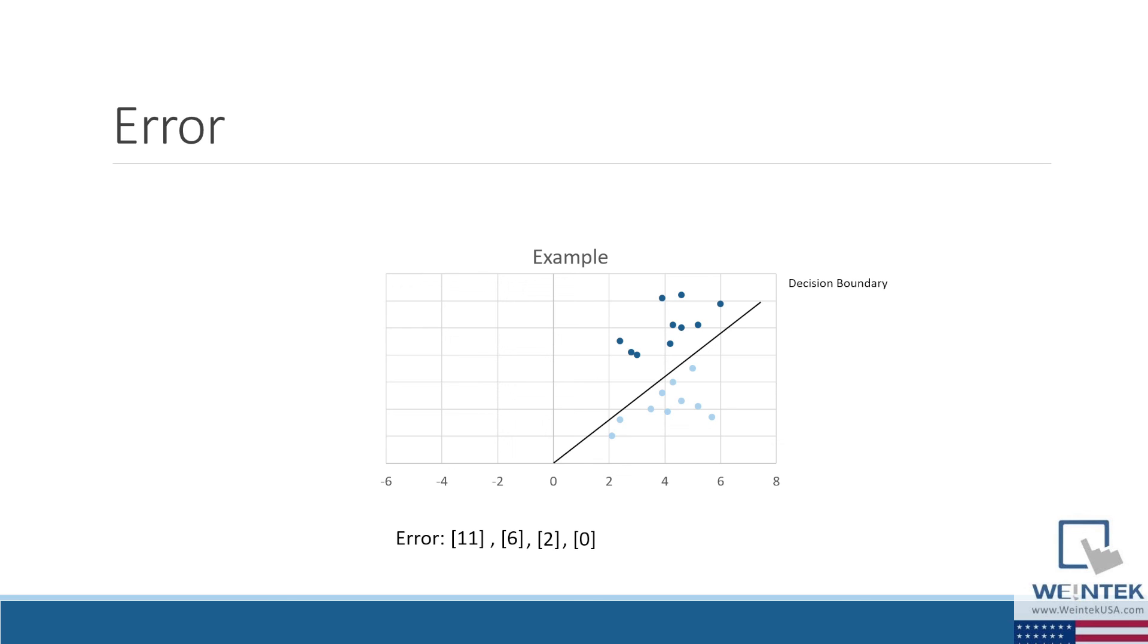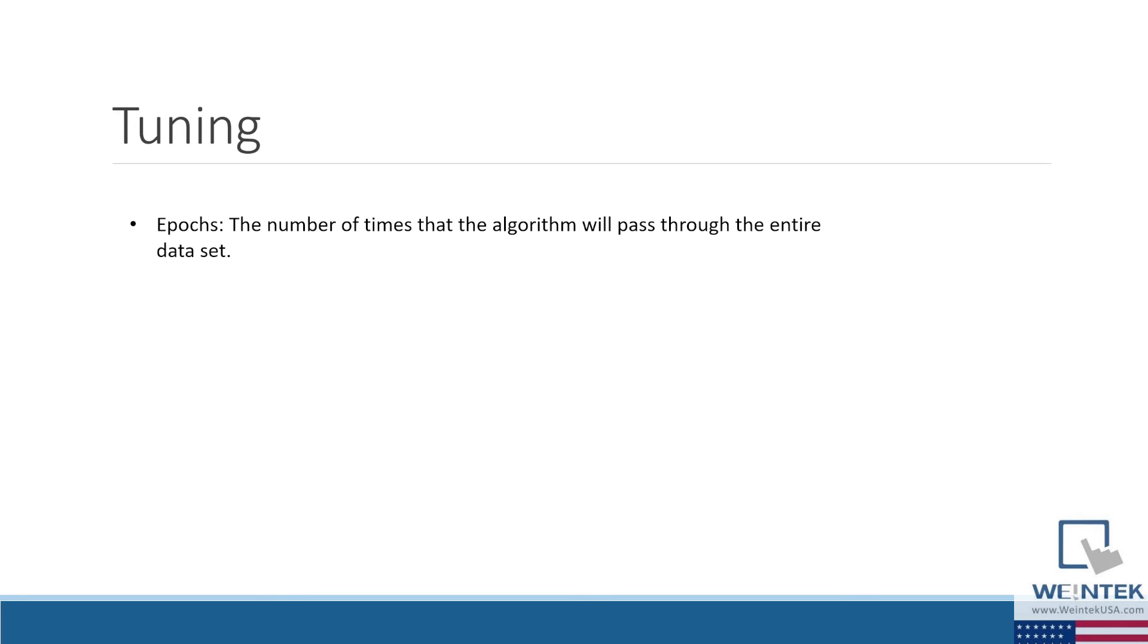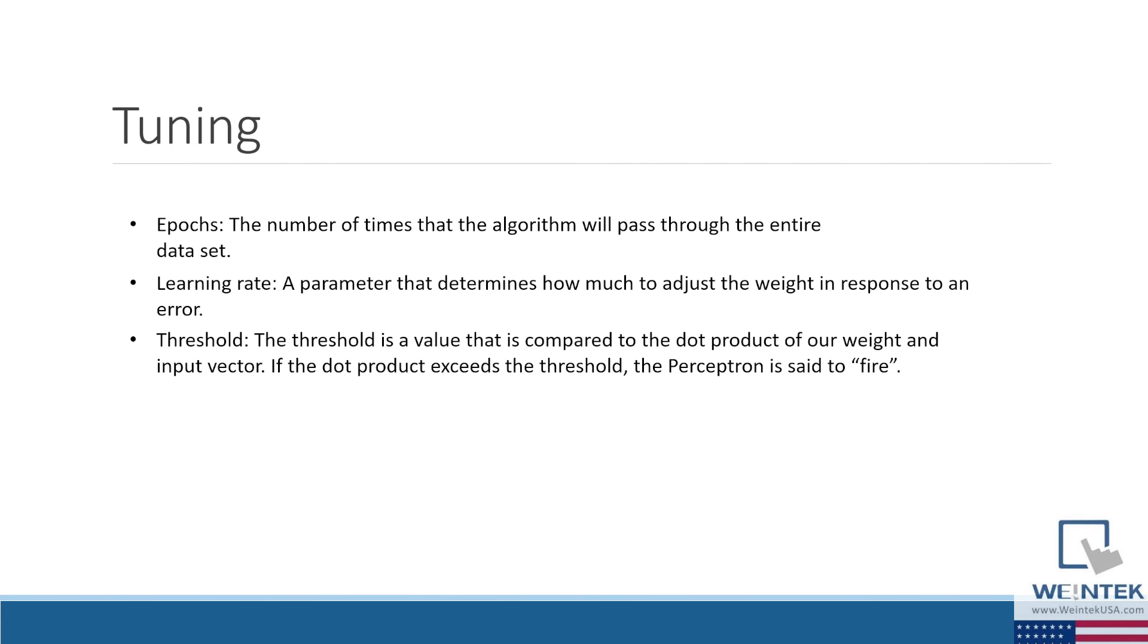If the algorithm does not converge, then perhaps the data set is not linearly separable. But if you believe it is, then you can adjust the number of epochs, the learning rate, or the threshold, until the model converges.